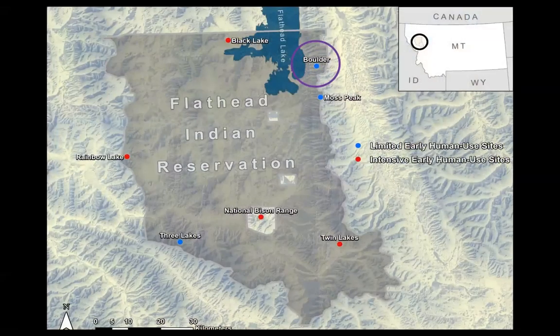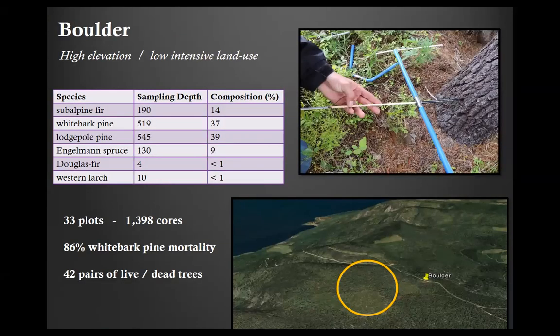My other site is on the western slopes of the Mission Mountains — the Boulder site. This is another high elevation, low intensive land use site. Composition here is about half and half between lodgepole and whitebark as the predominant species, with some subalpine fir as well. We have about 1,400 trees cored here. Mortality is pretty significant at this site too — about 86% whitebark pine mortality — but there's a lot more whitebark, so we were able to identify 42 pairs.